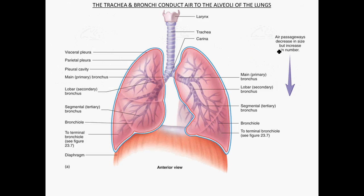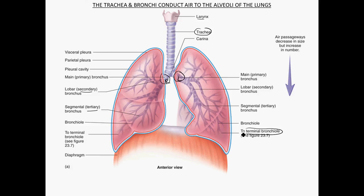Once air passes the larynx, it moves into the trachea and then down into the two bronchi — a right and a left primary bronchus. From there it moves into secondary lobar bronchi, then tertiary segmental bronchi, and they just keep getting smaller in diameter until you reach the terminal bronchioles, which are the smallest diameter air tubes.